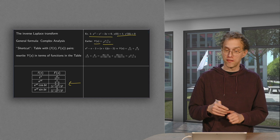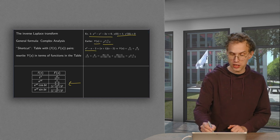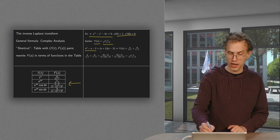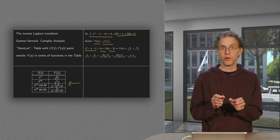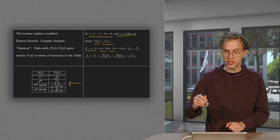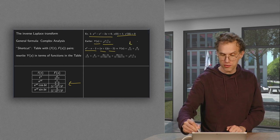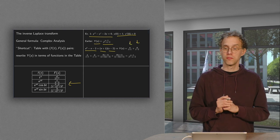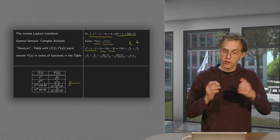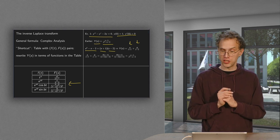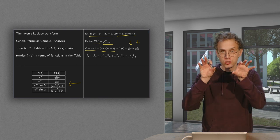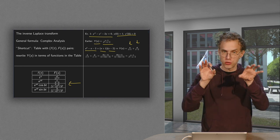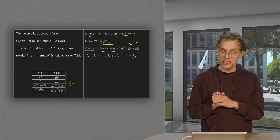We can factorize the denominator. s squared minus s minus 2 equals (s plus 1) times (s minus 2). And then we can split our y-bar(s) into two parts: an A over s plus 1 plus a B over s minus 2. So we do a partial fractions decomposition of y-bar(s). The idea is of course that the two terms we are left with are indeed in our table.